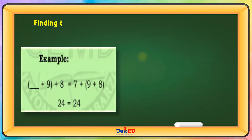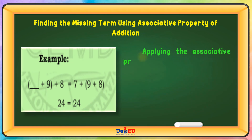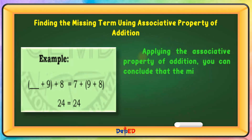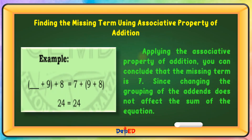Finding the missing term using the associative property of addition. Applying the associative property of addition, you can conclude that the missing term is 7, since changing the grouping of the addends does not affect the sum of the equation. Our missing term is number 7.